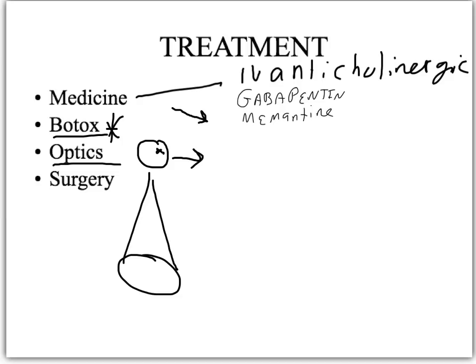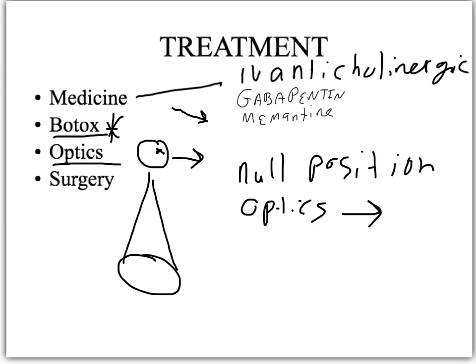Most people with nystagmus have something called a null position — where positioning the head just right causes the nystagmus to go away. In those cases, optics can be fixed so that when you're in the null position, your field of gaze is directly in front of you by bending light the right way. Surgery involves reattaching muscles so they always pull the eye to central gaze, allowing the person to look forward, read books, and avoid vision problems.